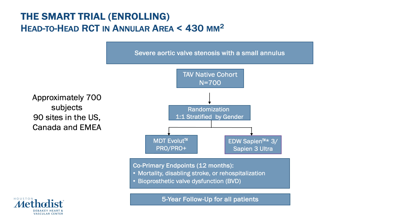There is a randomized control trial, which is ongoing and has recently completed enrollment — this is called the SMART trial. It is a head-to-head randomized control trial in patients with small aortic annulus defined as annular area less than 430 millimeters squared, which our patient would fit. Seven hundred patients are randomized one-to-one to the Evolute self-expandable platform versus the Sapien III balloon expandable platform across 90 sites in the United States and Canada. The 12-month co-primary endpoint includes mortality, disabling stroke or rehospitalization, and bioprosthetic valve dysfunction, with follow-up up to five years.